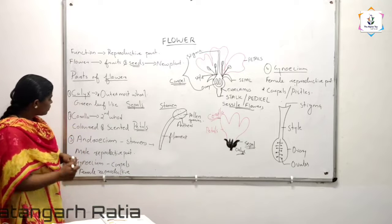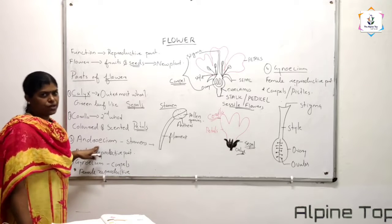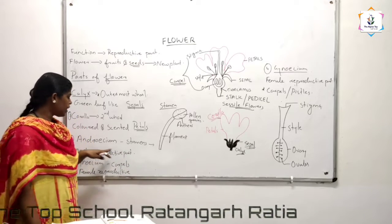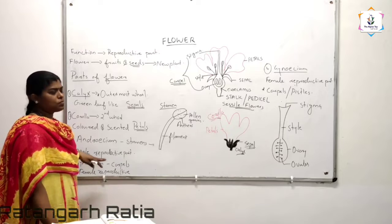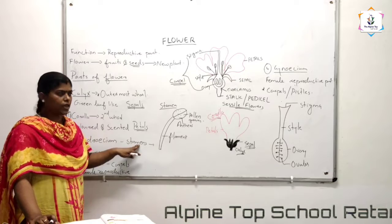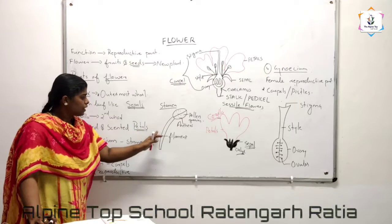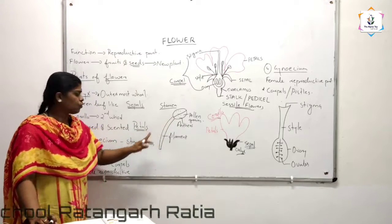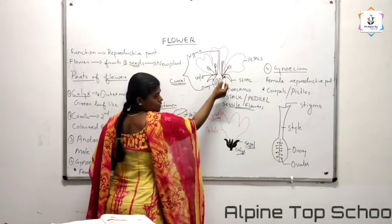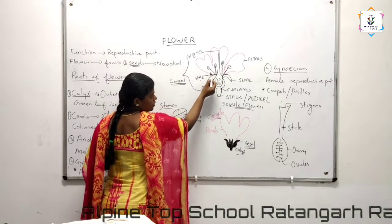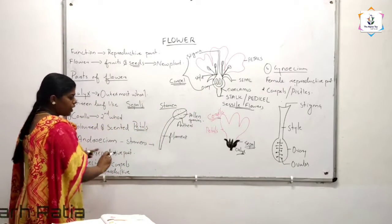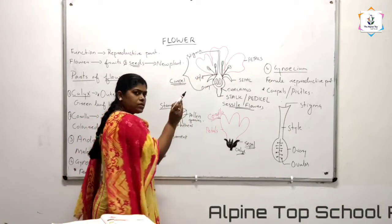The third whorl is known as androecium. Androecium is the main reproductive part of the flower — specifically the male reproductive part. Androecium is made with so many stamens. So many stamens are grouping together to form the androecium. You can see here: this is one stamen, this is another one, this is another one. It is mainly arranged in a whorl inside.